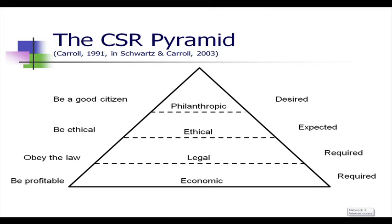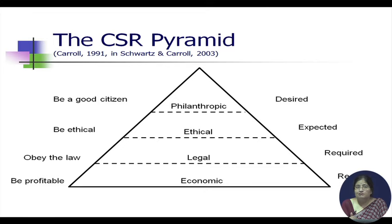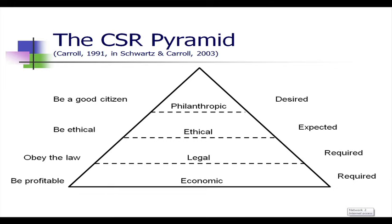The CSR Pyramid was designed by Archie Carroll, published in a paper in 1991, and then cited in a paper by Schwartz and Carroll in 2013. The pyramid says that for an organization to function, the most basic requirement is to be economically viable — organizations must be profitable. That is required. The next level is to obey the law.